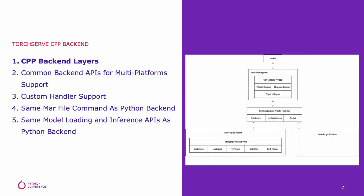Let's deep dive CPP Backend internal. As with the Python Backend, CPP Backend is divided into multiple layers. The top layer is a socket to communicate with the Java front-end. The second layer is service management, which is responsible for request/response encoding, decoding, and dispatching the requirements.